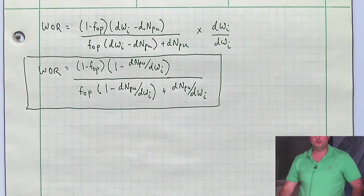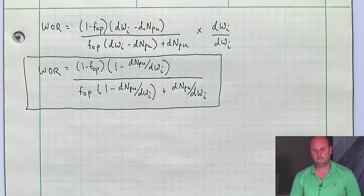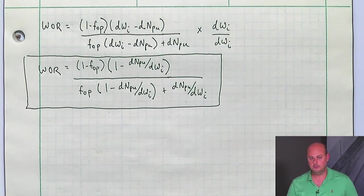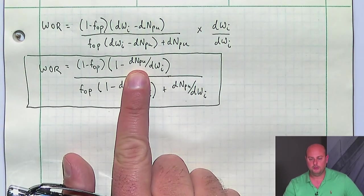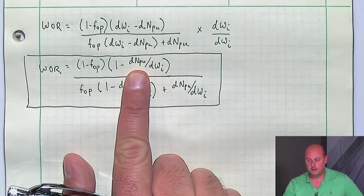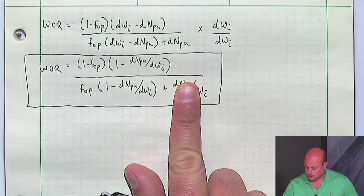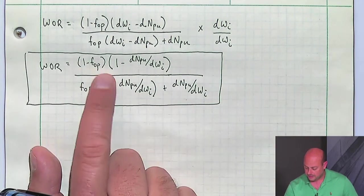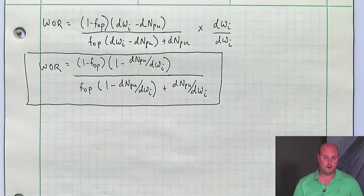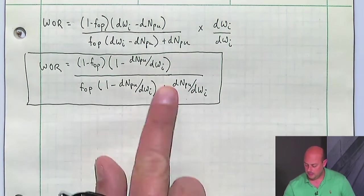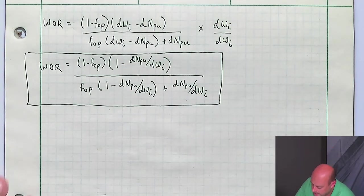This is the formula we're going to use to calculate the water-oil ratio. Notice that if the aerial sweep efficiency is 100%, there isn't any incremental oil in an unswept zone — all the DNPU/DWI terms go to zero, and we're left with (1 minus FOP) over FOP. That's a really simple formula for water-oil ratio, but it only applies after you're at 100% aerial sweep efficiency. Before that, we need to know DNPU/DWI.